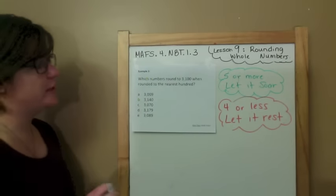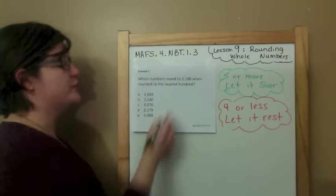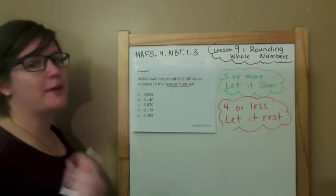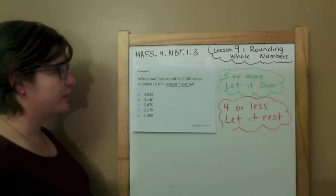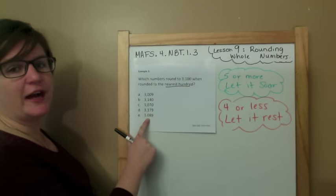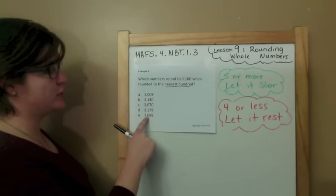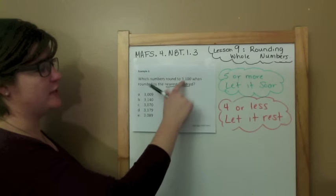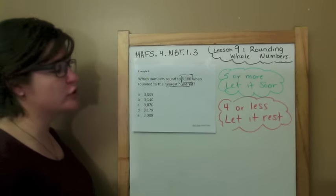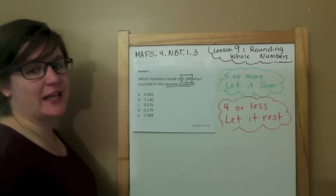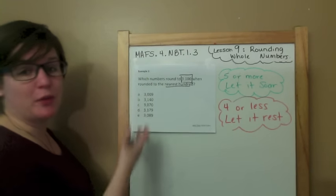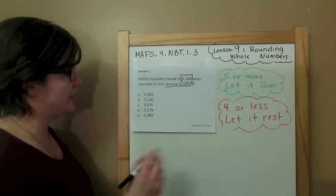Example 3: Which numbers round to 3,100 when rounded to the nearest hundred? So what I need to do is round these numbers to the nearest hundreds place to see if I get the magical 3,100. This is a multi-select item — it says 'which numbers,' so there's probably going to be more than one answer. Let's go.